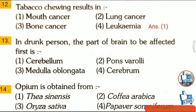Question 13: In a drunk person, the part of the brain to be affected is — first, cerebrum; second, pons varoli; third, medulla oblongata; fourth, cerebrum. The correct answer is option 4: cerebrum.